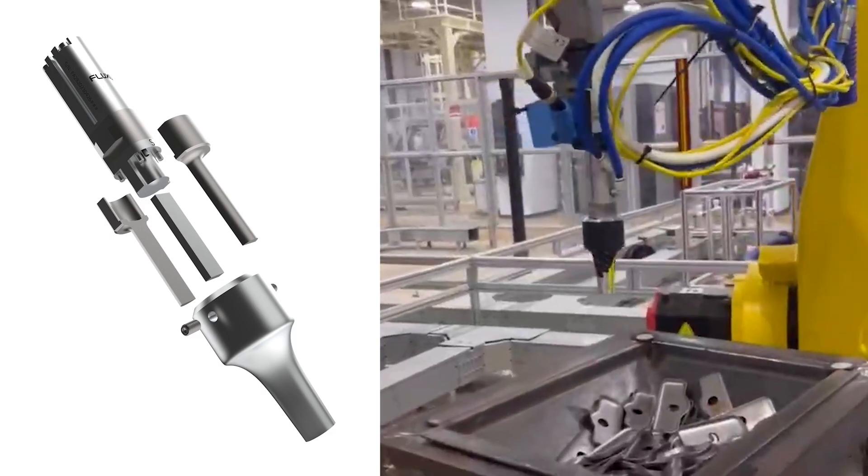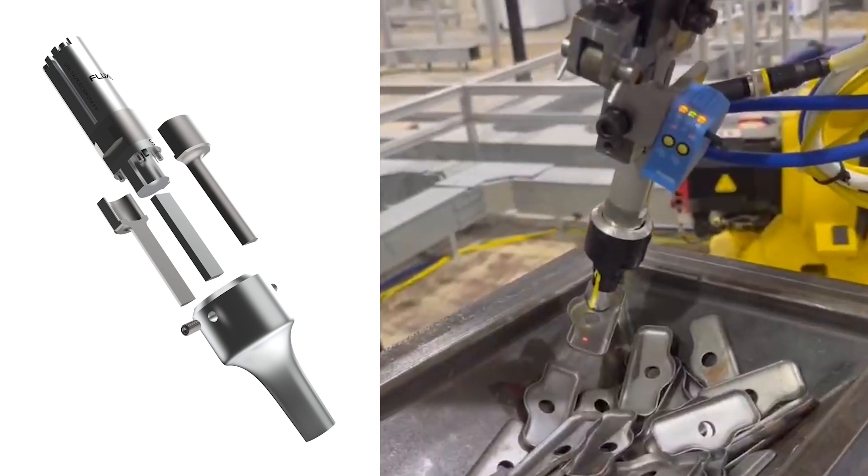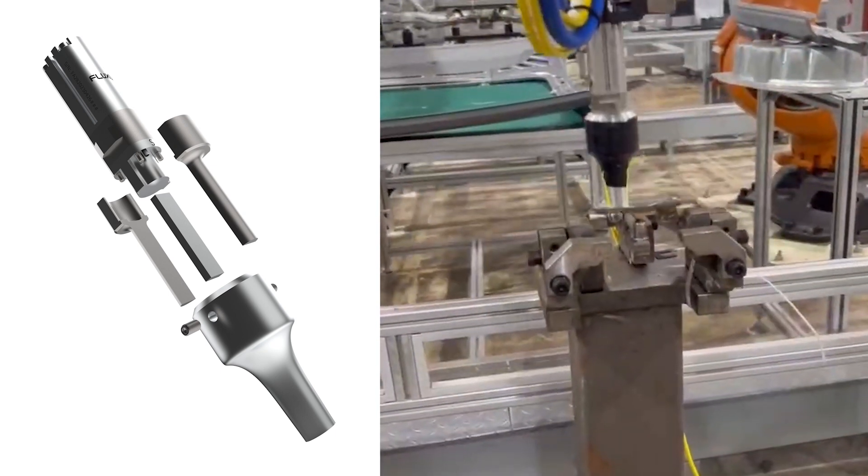In this application, the FA28 features custom elongated poles and an aluminum shroud, allowing the tool to pick small brackets one at a time in a 3D vision bin-picking setup.